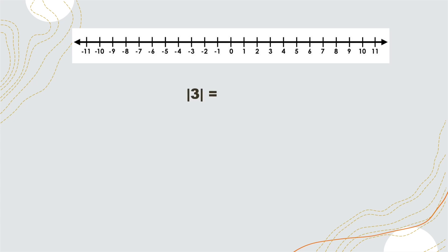The first one: we have the absolute value of positive 3. From zero, we move three units up to positive 3. Or we can start at 3 and go toward zero — 1, 2, 3. So we moved 3 units to reach zero. Since we are talking about distance, that is always positive. Therefore, the absolute value of positive 3 is 3.